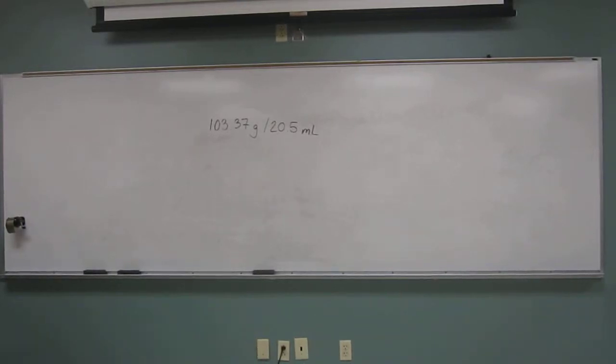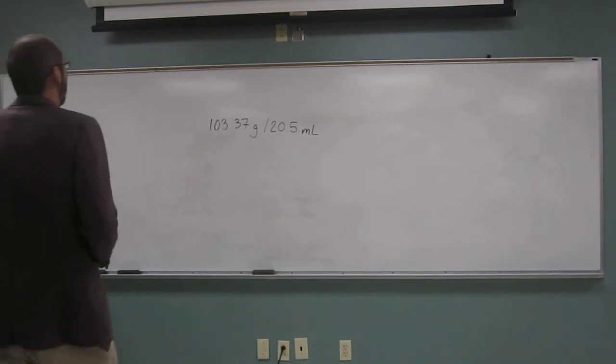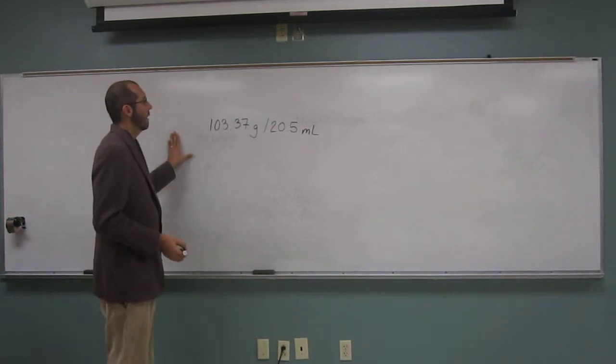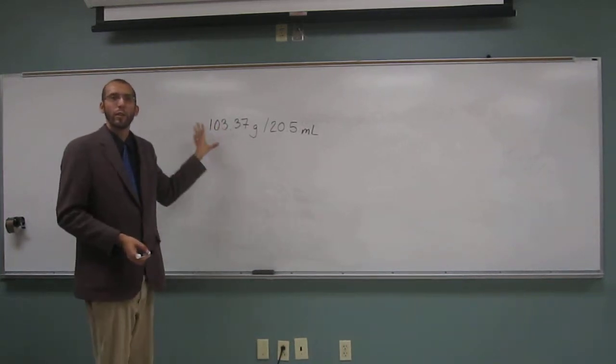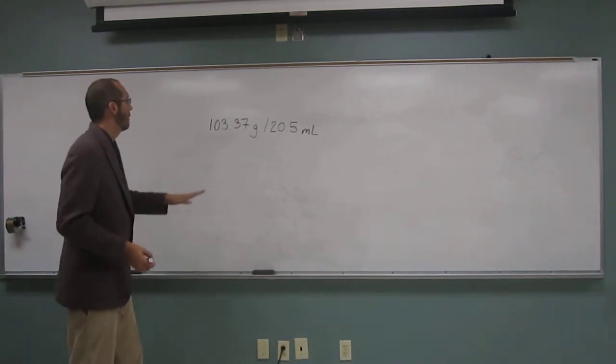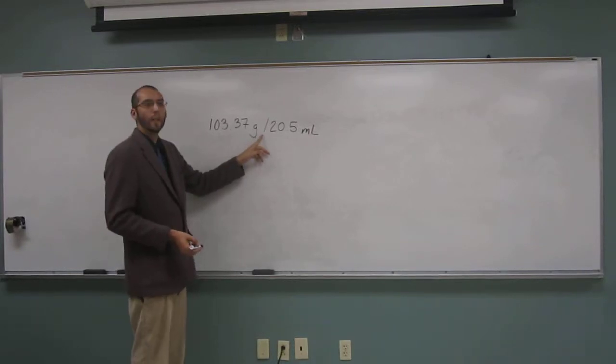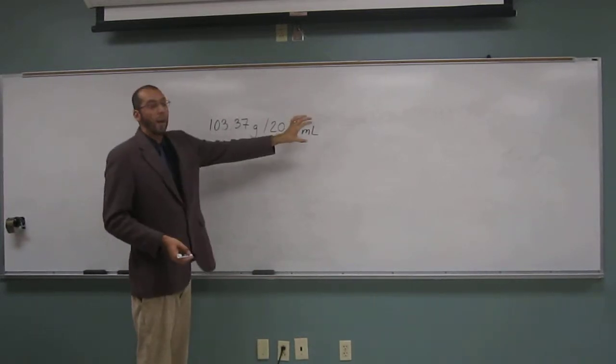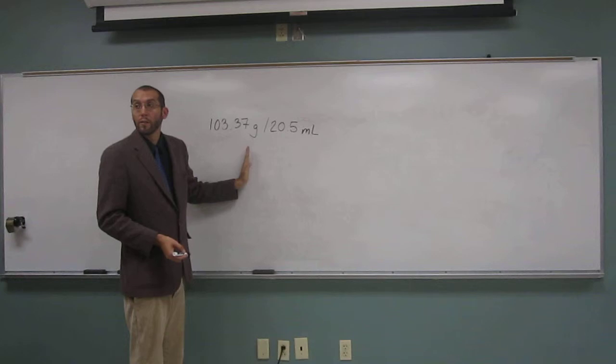Okay, so let's try a significant figure rule problem using multiplication or division. This one's of course division, right? So everybody knows that this sign here, even when it's all on the same line, means division.